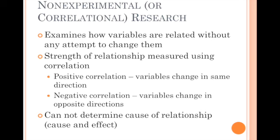Another kind of research is non-experimental or correlational research. In non-experimental research, you're not actually attempting to change variables — you're just examining how two variables are related to one another. For example, I might look at the relationship between hours of sunlight during the day and your mood. In summer, hours of sunlight goes up and so does your mood; in winter, hours of sunlight goes down and maybe your mood also goes down. There are two kinds of correlations. A positive correlation is when both variables change in the same direction — the more hours of sunlight, the higher your mood. Another example: the more hours of studying you do, the higher your grade. A negative correlation just means they change in opposite directions — the more alcohol you drink the night before an exam, the lower your exam score. As one variable goes up, the other goes down.